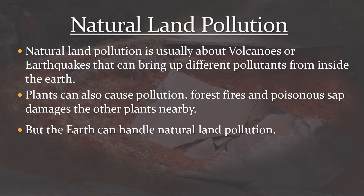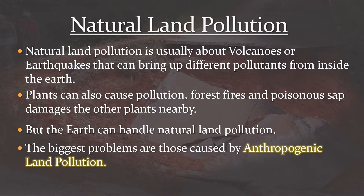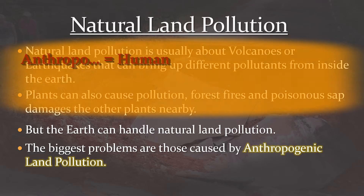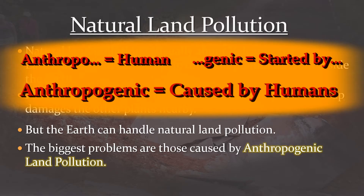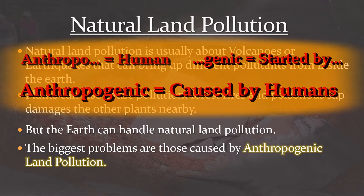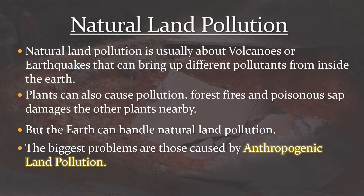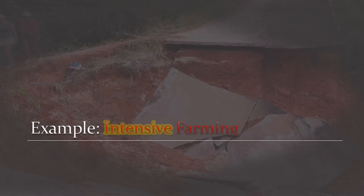The biggest problems are those caused by anthropogenic land pollution. Anthropo means human and genic means starting. So the biggest problems are caused by human-caused land pollution. This doesn't make those activities bad, but we are doing this to a lot of land on earth. There are many ways in which we cause land pollution, and we are only going to look at a couple of examples in this video.